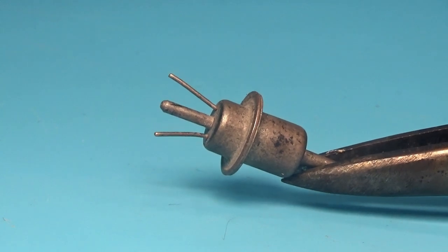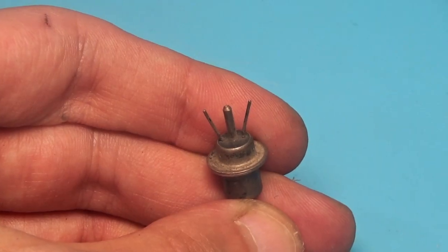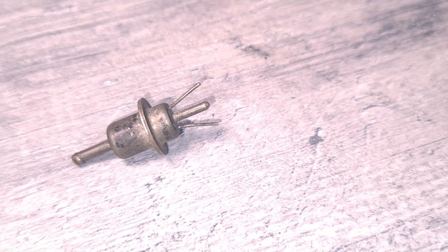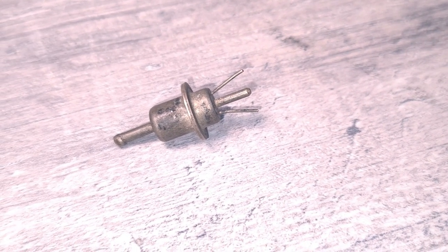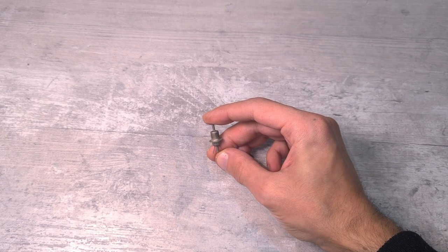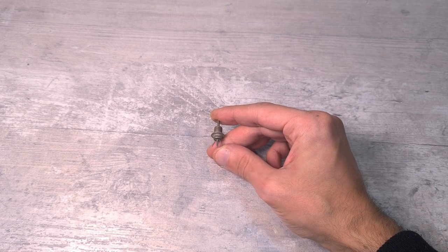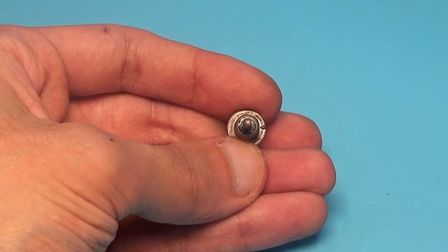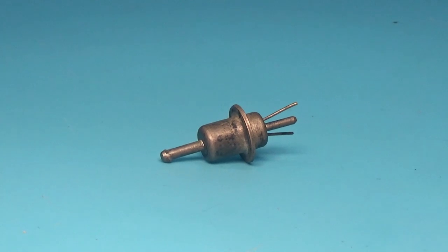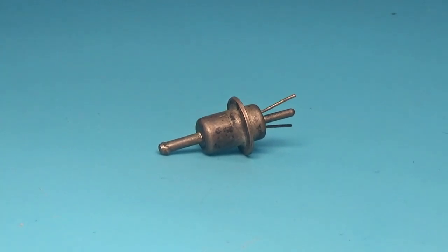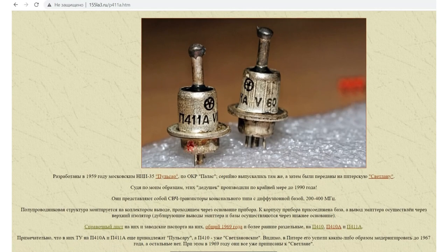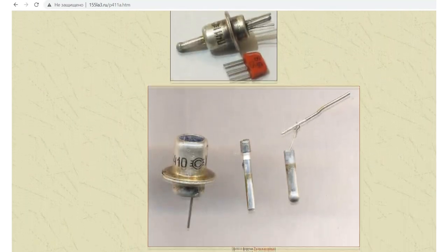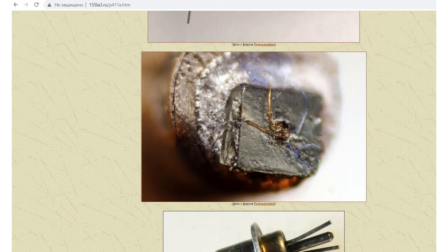These are high-frequency transistors with a maximum cutoff frequency of 200 to 400 kilohertz. The current amplification factor is up to 120. The power dissipation is about 100 milliwatt, and the maximum collector current is not more than 20 milliamps. They are also low-voltage, designed to operate in 5 to 6-volt circuits, and contain some gold and silver. There is also the P411 in the same package. These two types were one of the first Soviet high-frequency transistors.